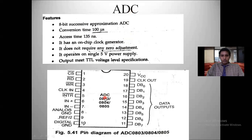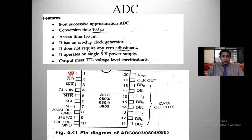Now let us see the pin diagram of the ADC 0803, 0804, or 0805 family. It has a total of 20 pins — pins 1 to 10 on one side and 11 to 20 on the other. The curved notch on the left indicates pin 1. The first pin is CS bar, which is a chip select signal essential for activating the ADC — to start converting analog data into digital, CS bar must be activated.